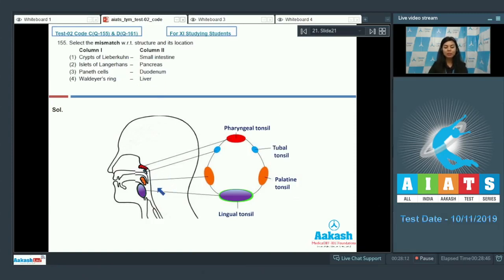The Waldyer's ring is the lymphoid tissue of the pharynx, and it's also called tonsils. Tonsils are arranged in a ring-like manner called Waldyer's ring. It consists of pharyngeal tonsils, tubal tonsils, palatine tonsils, and lingual tonsils.